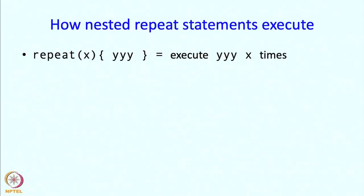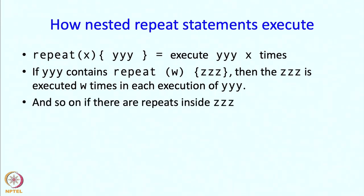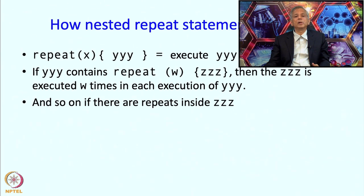In general, if I have repeat x { yyy } it means execute yyy x times. If yyy itself contains repeat w { zzz }, then zzz is executed w times in each iteration of the outer repeat x. And I can have as many repeats nested inside each other — the logic is exactly similar.